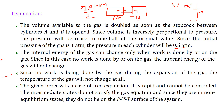Since no work is done by the gas during the expansion, the temperature of the gas does not change either. This process is a case of free expansion — it is rapid and cannot be controlled. The intermediate states do not satisfy the gas equation, and since they are in a non-equilibrium state, they do not lie on the PVT surface of the system.